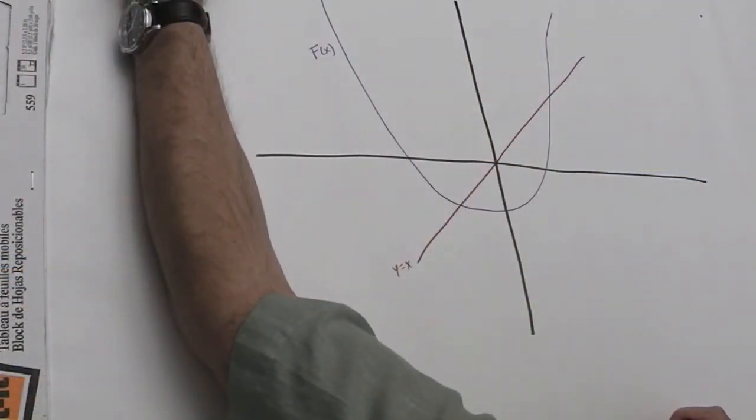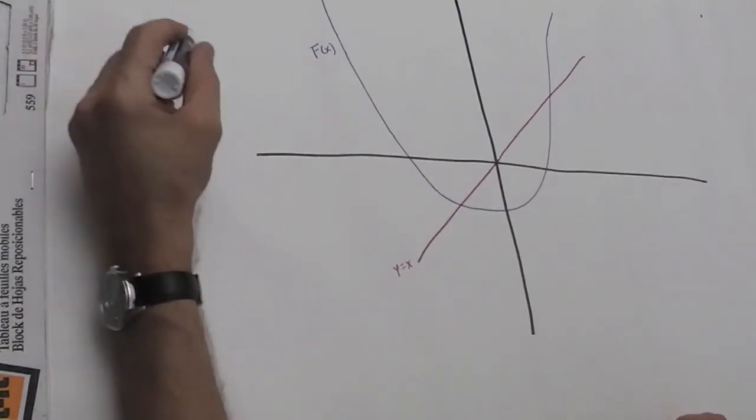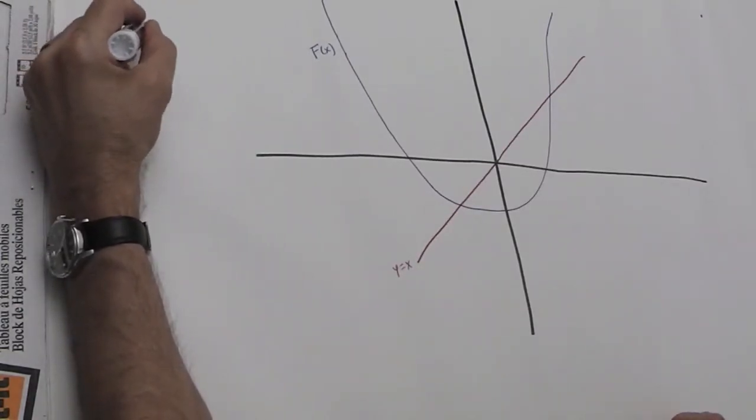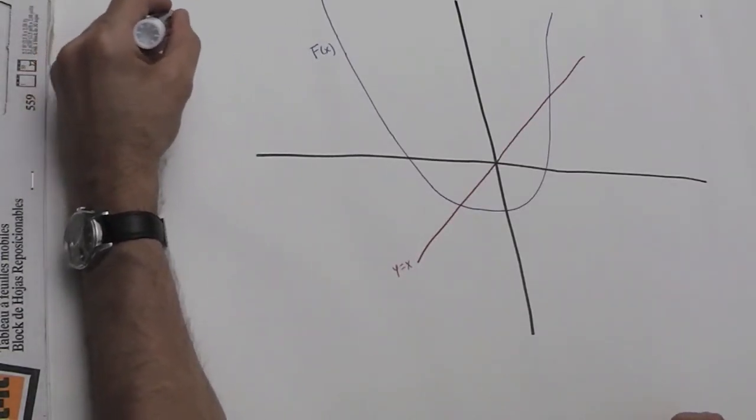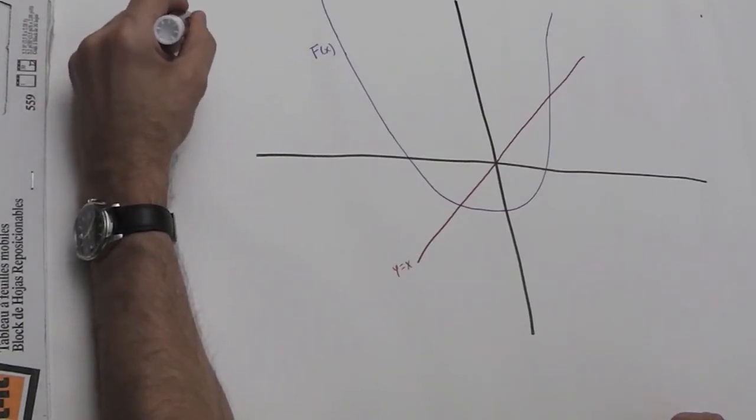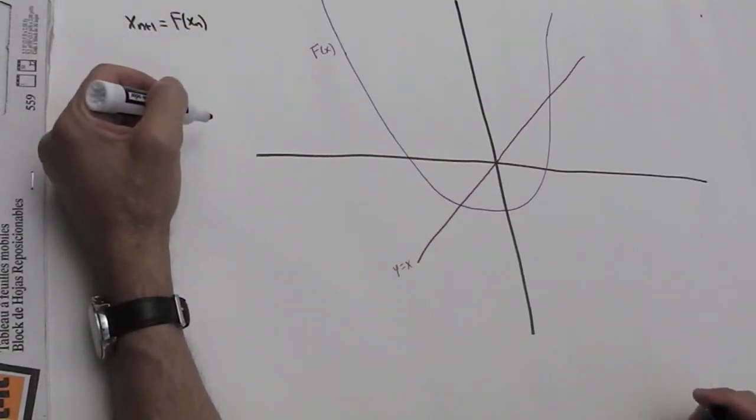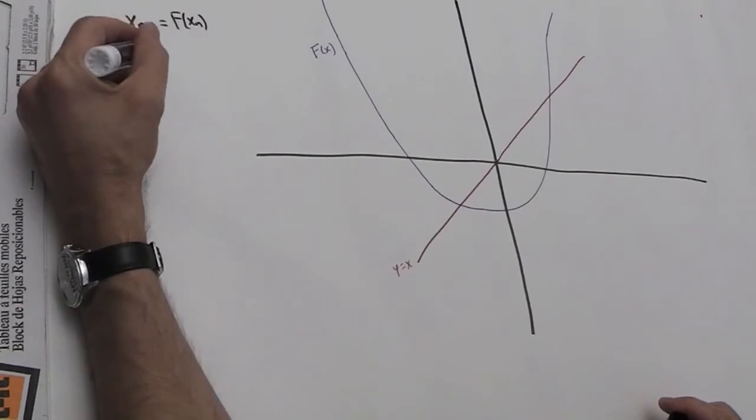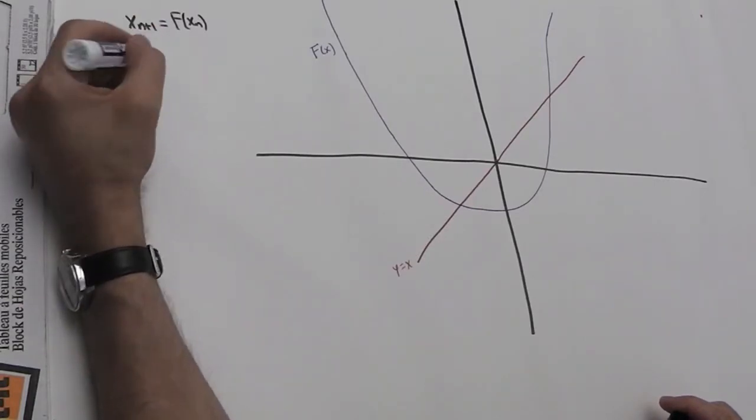Basically, we have a DDS: x_n+1 = F(x_n), our standard DDS. We want to start with an initial value x_0 and see what happens to it, see what the orbit is.